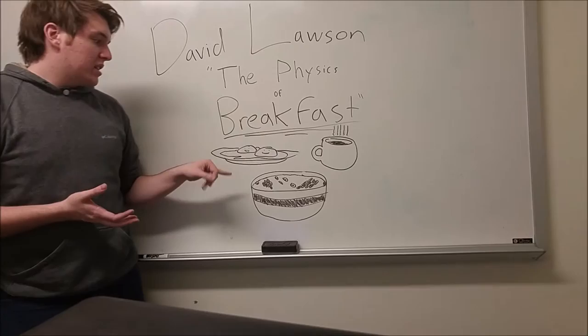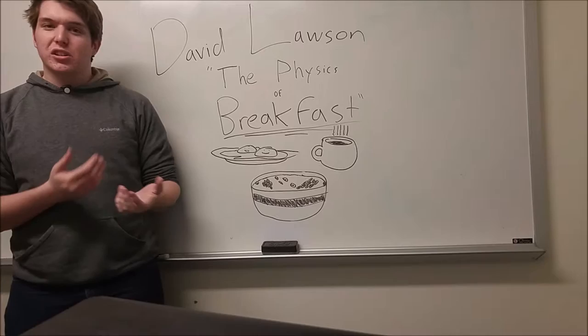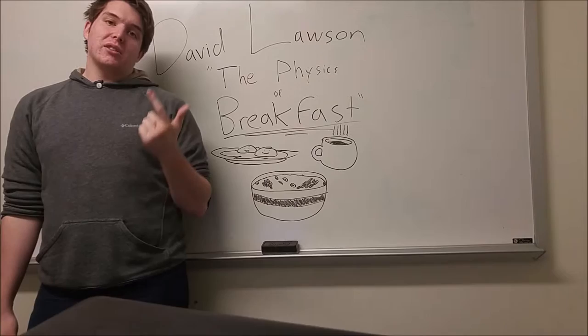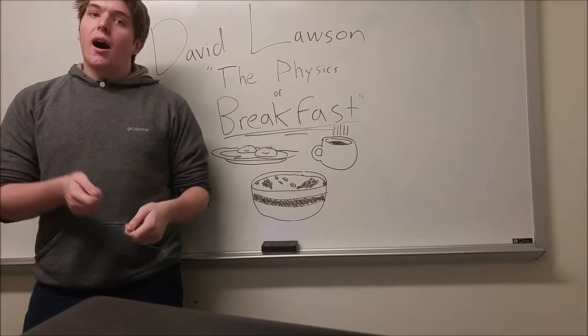Something I learned that I already kind of knew about was how eggs cook. I already knew that eggs cook by denaturing the protein — it has nothing to do with water leaving the egg. One thing that's interesting related to eggs is that there are three kinds of scrambled eggs: British scrambled eggs, American scrambled eggs, and French scrambled eggs.